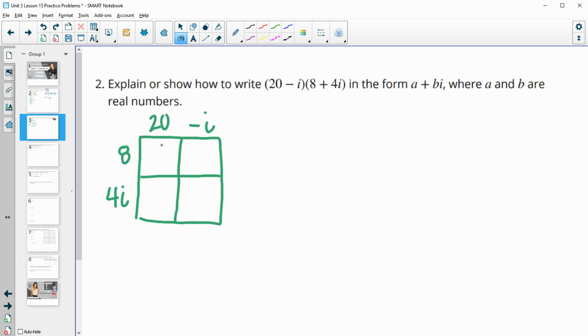So we would multiply (20 - i) times (8 + 4i). So 20 times 8 is 160. 8 times negative i is negative 8i. 20 times 4i is 80i. And then 4i times negative i is negative 4i squared. If we simplify the i squared to a negative 1, this turns to plus 4. So then when we combine our 160 and our positive 4, we get 164. And then our 80i and our negative 8i is a positive 72i. So then we have it in this form, a plus bi.